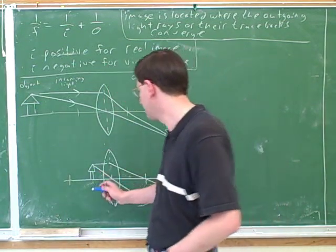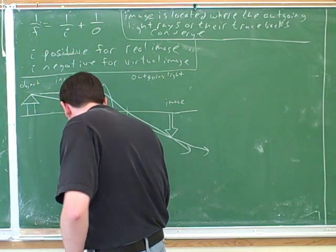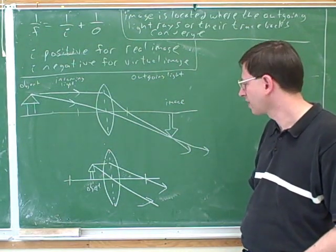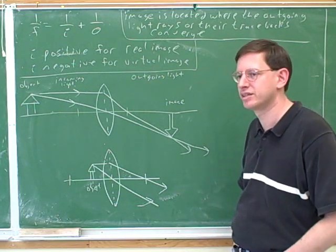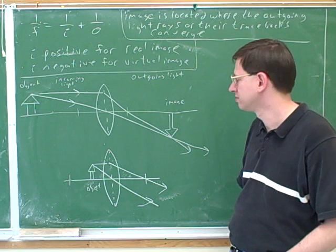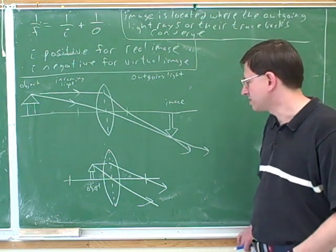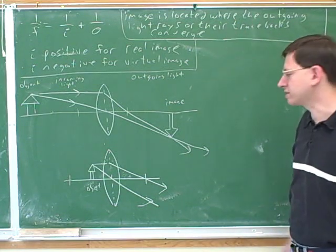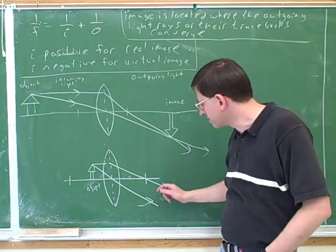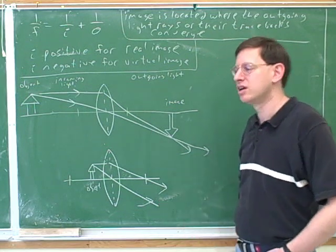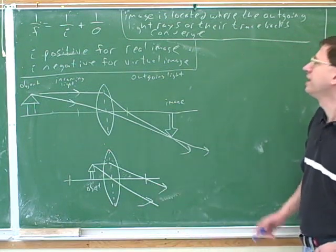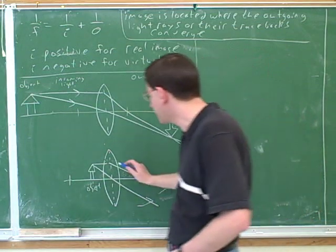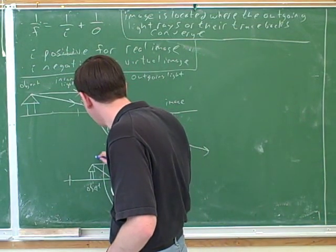Here we have another object and a couple of rays of outgoing light. We want to figure out where the image is. Remember the image is supposed to be located where the outgoing light rays converge, but if you look carefully these rays are never going to converge — they're actually getting further from each other. So instead we have to trace them back along the same line they were already forming.